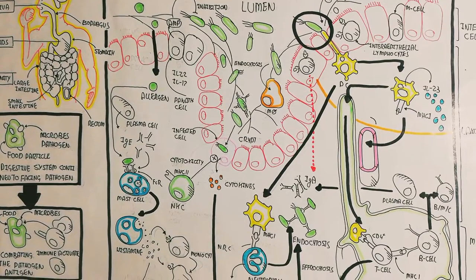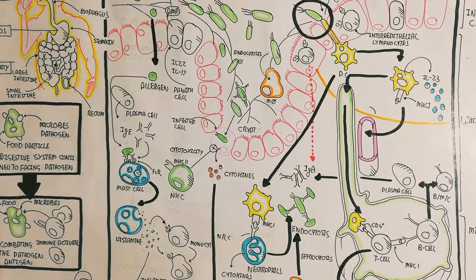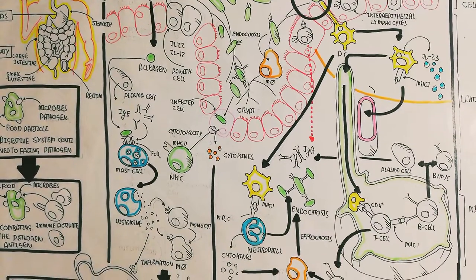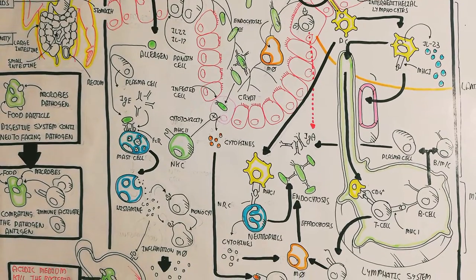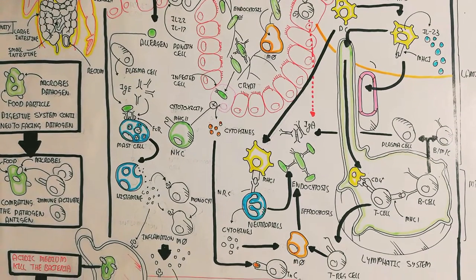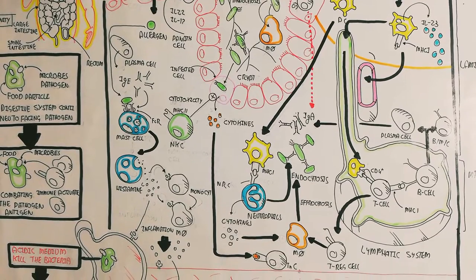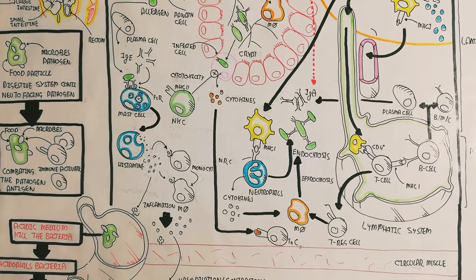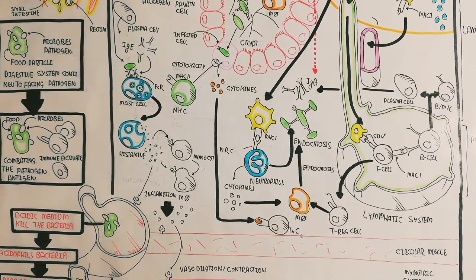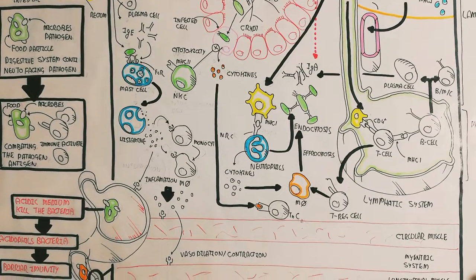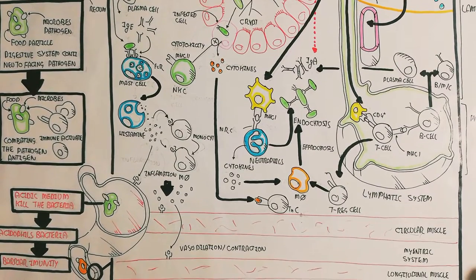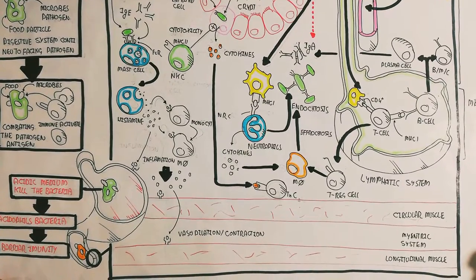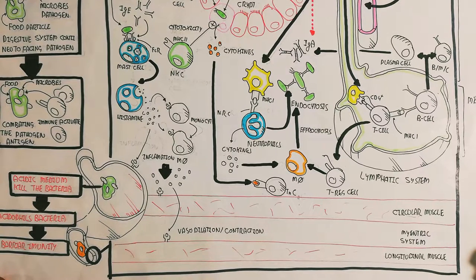The intra-epithelial lymphocytes trigger IgA for the opsonization of the antigen to mount an immune response. This mechanism describes the digestive system's protection against pathogens. We have discussed the digestive system mucosal immune system for prevention of pathogens. I hope this makes sense. If you like this video, please subscribe, like, share, and leave a comment for suggestions.